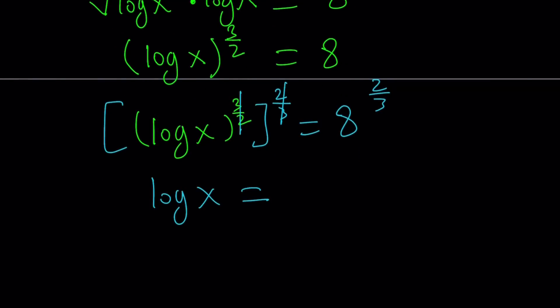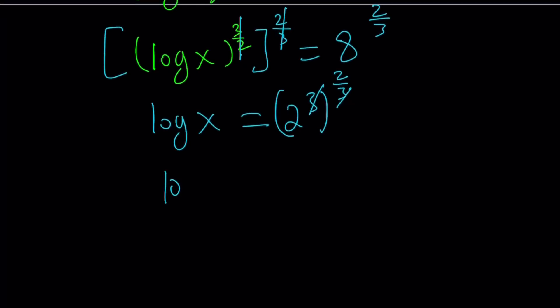But 8 can be written as 2 to the third power. Therefore, we can go ahead and simplify this further. The 3 is going to be canceled out when multiplied by 2 thirds. And we're going to end up with log x equals 2 to the power 2, which can be written as 4. So log x equals 4.